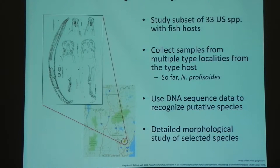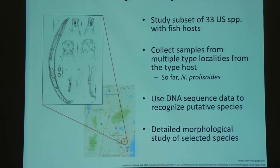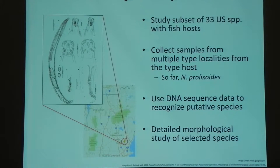A type locality — referred to a lot in systematics — is the locality where the worm was first described from, and the type host is the species that first hosted those original worms that were described. So far we've gone to a site in southeastern New Hampshire, our first type locality for the species Neokinorhynchus prolixoides, which I have pictured here. These are the original drawings from the worms they used to describe the species. Once we have our worms, we want to use DNA sequence data to recognize these putative species — we're hoping that when we use certain molecular marker genes, we will see genetic differences with worms grouping up by species.